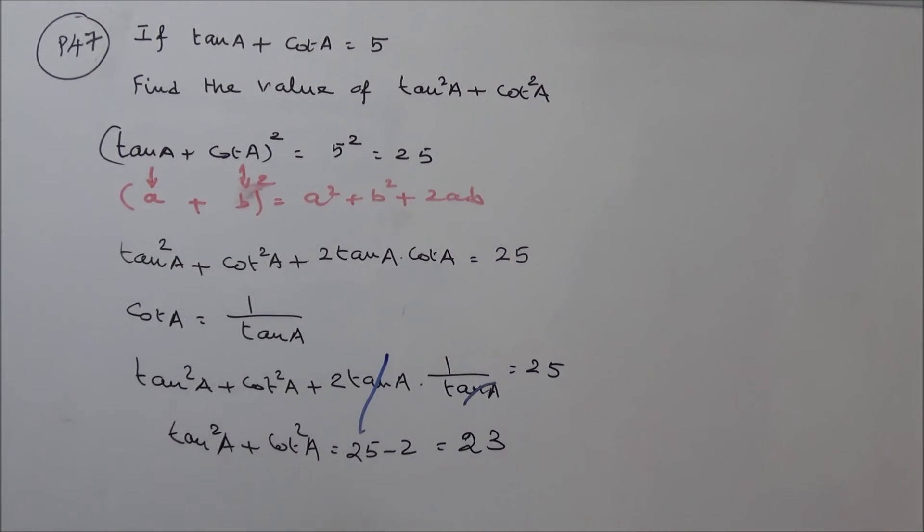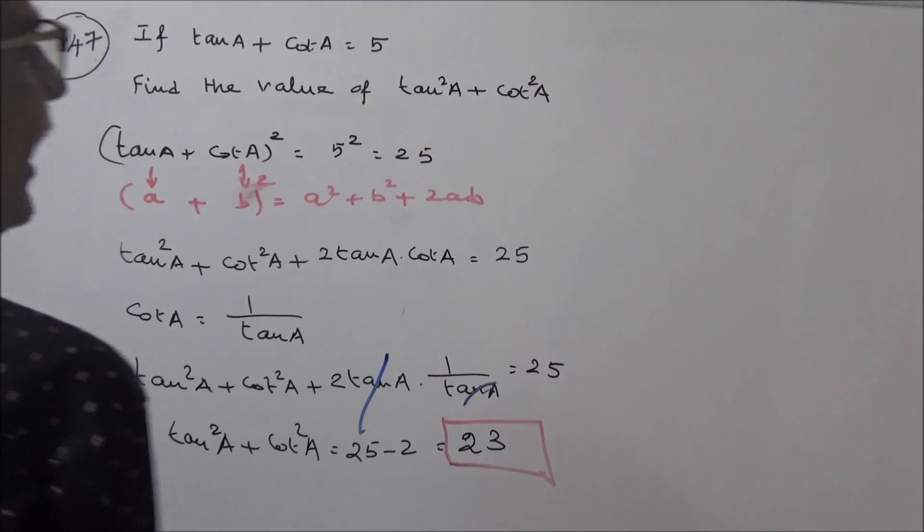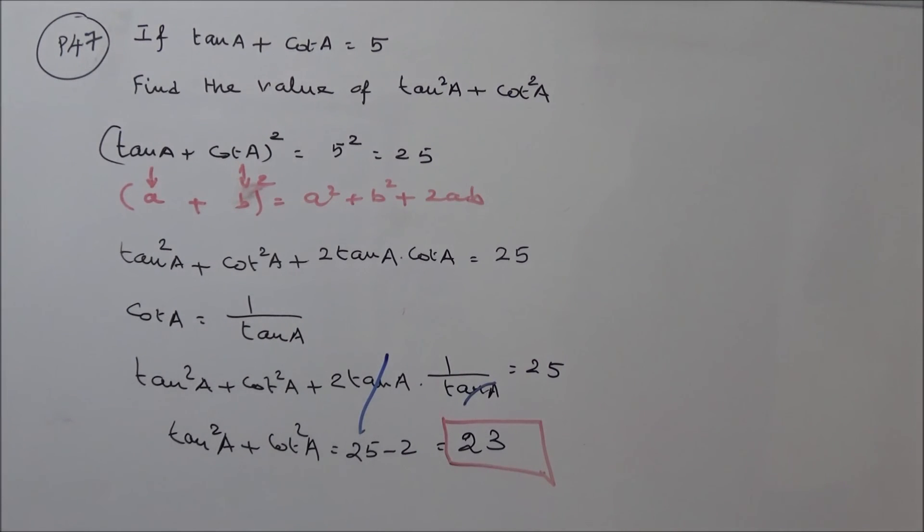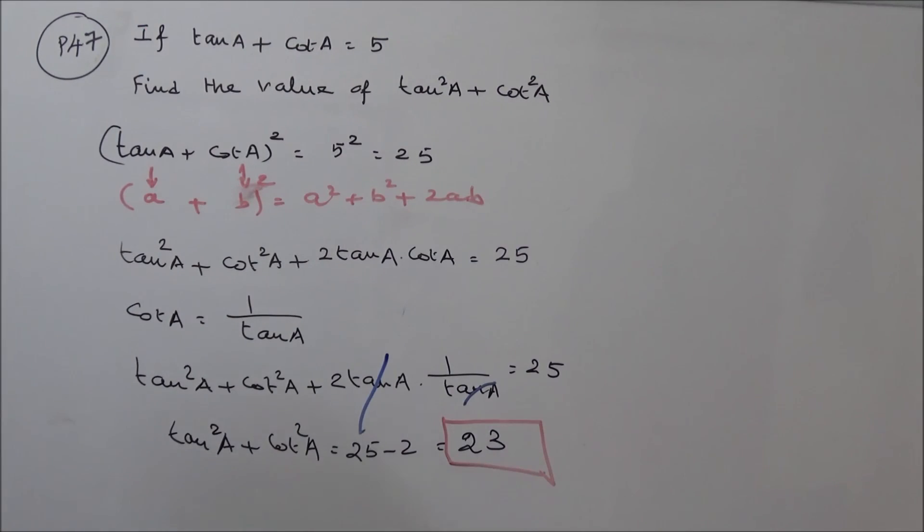The value of tan square A plus cot square A is equal to 23 if tan A plus cot A is equal to 5. Okay, thanks.